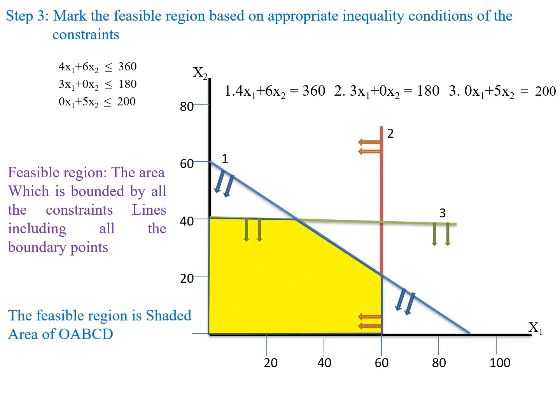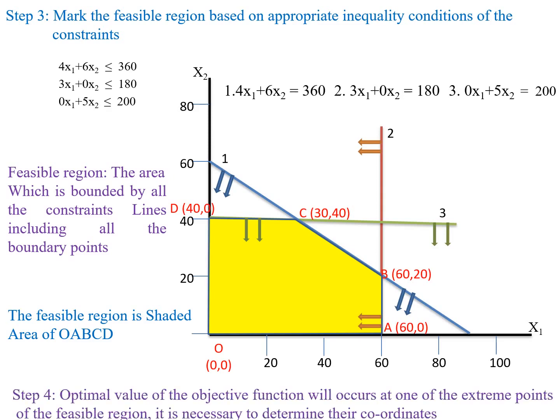The region OABCD is the common feasible region. The coordinates of this region are: O = (0, 0); A = (60, 0); B = (60, 20); C = (30, 40); D = (0, 40). The next step is to find the optimal value of the objective function.